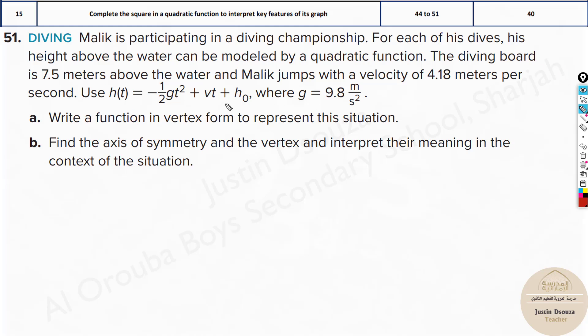Same way, over here we can solve it just like what we did a while ago. Here it is about diving. Malik is participating in a diving championship. For each of his dives, his height above the water can be modeled by a quadratic function. The diving board is 7.5 meters above the water, and Malik jumps with a velocity of 4.18 meters per second. Use g equals 9.8 here—remember, everything is in meters, therefore we use acceleration due to gravity also in meters per second squared. So the equation h(t) is given as minus half, g is 9.8, t squared plus 4.18t plus 7.5. Now here you can simplify this: minus 4.9t squared plus 4.18t plus 7.5. This is the answer.